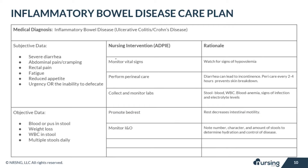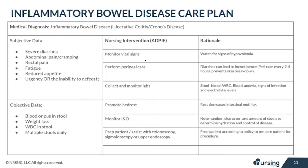Monitor the intake and output of your patient, noting the number, character, and amount of stools to determine hydration and control of the disease. Your patient may need a colonoscopy, sigmoidoscopy, or upper endoscopy depending on what the doctor chooses. Prep the patient according to your policy, which may include bowel prep the night before to clean their bowels so the camera can see clearly.